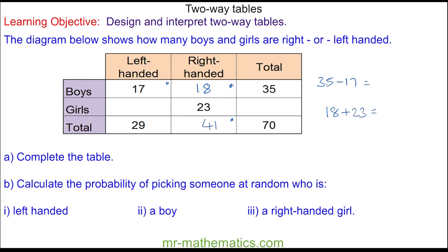Next we can work out the left-handed girls, which would be the total of 29 take away 17, which is 12. And finally we can work out the total girls as the sum of the left and the right-handed, which is 35. We can check this works because the boys and the girls does make the total.